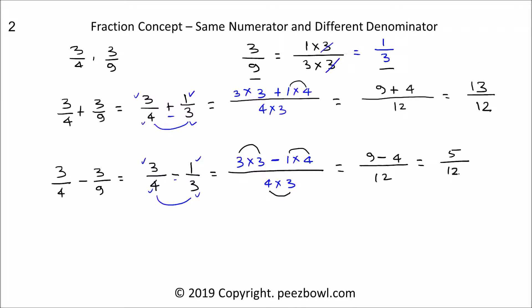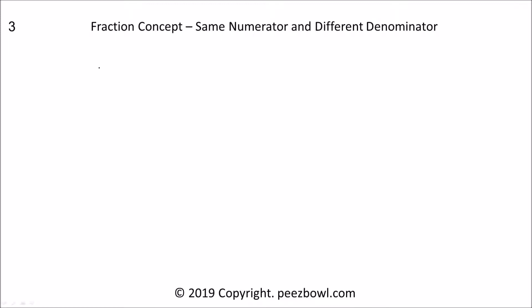This is the result when we are subtracting 3 upon 4 and 3 upon 9. You can also try to work on different examples. I will give you few examples to solve: first, 2 upon 3 plus 2 upon 7 — same numerators 2, different denominators 3 and 7; second, 1 upon 5 minus 1 upon 8 — same numerators 1, different denominators 5 and 8. You can also refer to my website peaceworld.com for more videos, quizzes, and study materials. Thank you for watching.